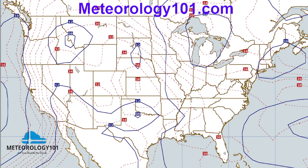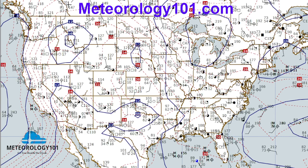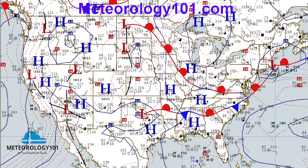We're going to bring up the station plots — every weather station across the United States sends out a weather observation, and the computer deciphers that observation and puts station plots on the charts, so we can see wind direction, cloud cover, and other data. Then we're going to add our fronts. These fronts are computer generated, so they're not 100% accurate. This warm front right here is probably not there — there's really no warm air advection or major warm sector around this low to justify that strong of a warm front.